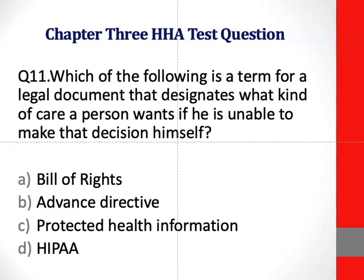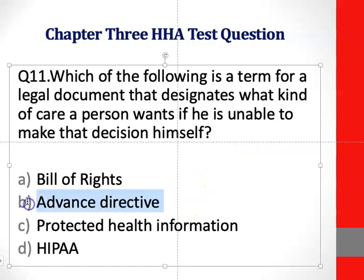Question 11: Which of the following is a term for a legal document that designates what kind of care a person wants if he is unable to make that decision himself? The correct answer is B — advanced directive.